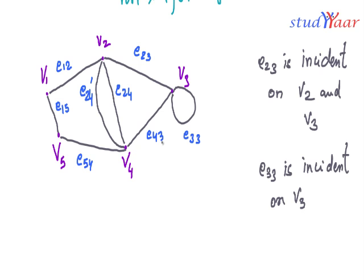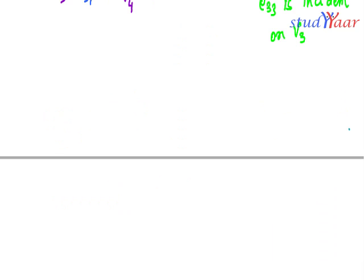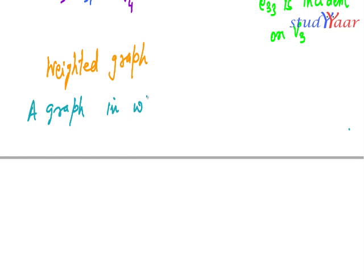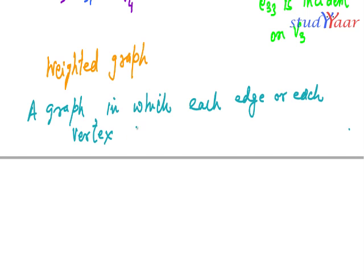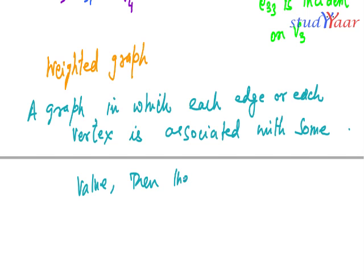Next we are looking at what is a weighted graph. A graph in which each edge or each vertex is associated with some value is known as a weighted graph.